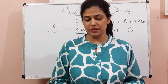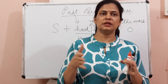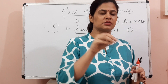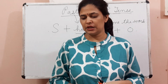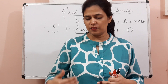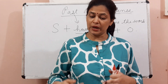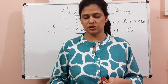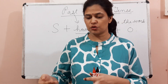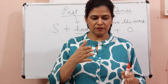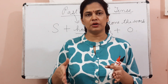Mr. Das did these things yesterday morning in the order shown — four actions in a particular order. First action: he read the newspaper. Second: he had breakfast. So the sentence is: 'When he had read the newspaper, he had breakfast.' Then: 'When he had had breakfast, he watched TV.' Then: 'When he had watched TV, he talked to his friends.' Whenever you know the sequence of actions, you use the verbs appropriately.